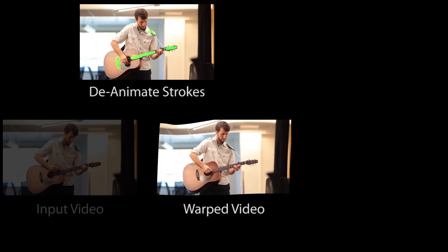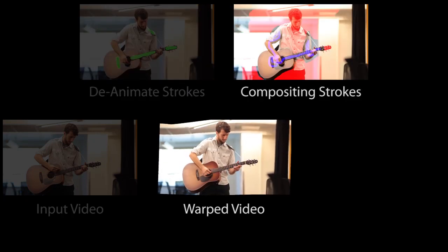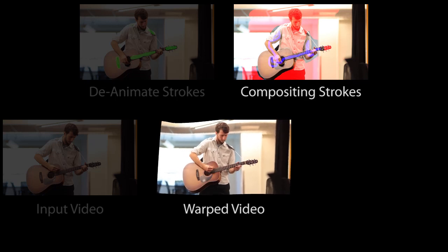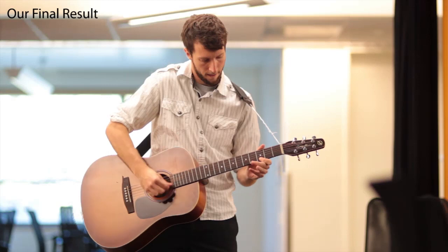However, the warp introduces unwanted motions in the background. The user therefore draws compositing strokes: red to indicate that the background and head should be static, and blue to indicate that the guitar and arms should be dynamic. Our method then composites the dynamic warped video with static still frames from the input video in order to respect these strokes. Here is the final result.